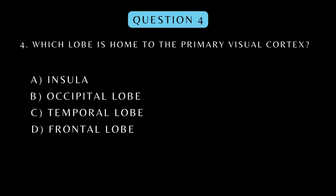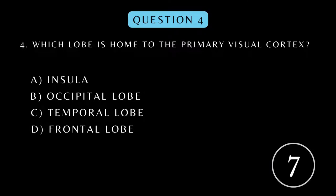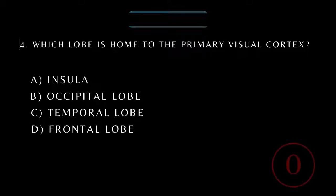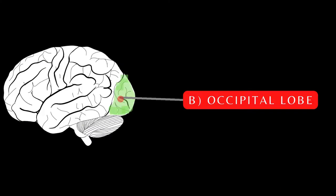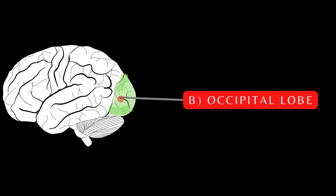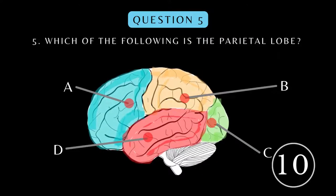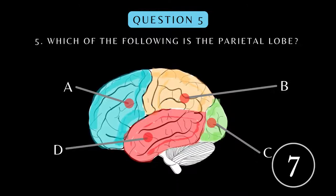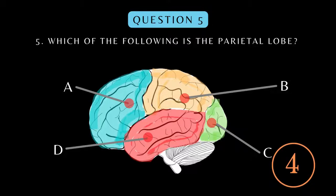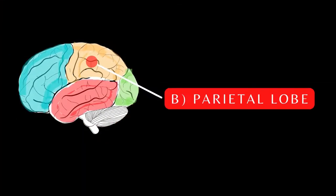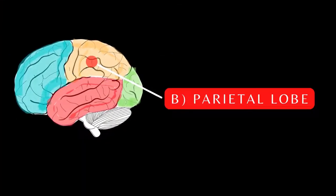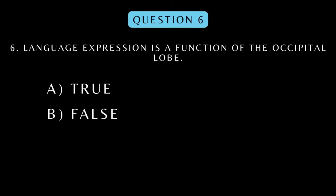Which lobe is home to the primary visual cortex? Which of the following is the parietal lobe? True or false: Language expression is a function of the occipital lobe.